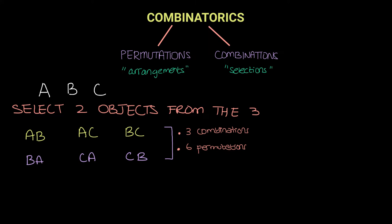You can see that every combination has two permutations. Every combination you choose has two permutations. The combination BC has two permutations BC and CB, and the same goes for the other two combinations.